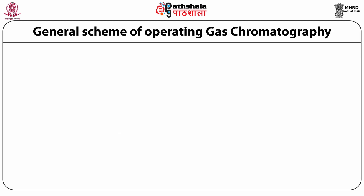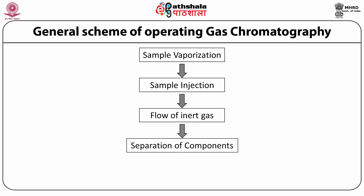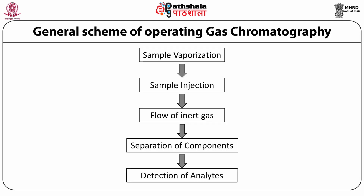The general scheme of operating gas chromatography involves the following steps: first, vaporizing of the sample; next, injection of the sample into the column; flow of inert gaseous mobile phase through the column; separation of the components on the basis of partition coefficient; then the detector converts analytes into an electrical signal for measurement. Every compound has a different retention time, thereby each compound elutes out at a different time.